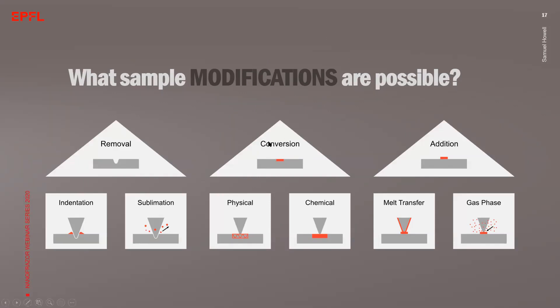With the materials that have been researched in the literature, we found there are three types of sample modifications: removal, conversion, and addition. Each modification includes different processes such as indentation, sublimation for removal, physical and chemical conversion of the material, or addition by melt transfer or from the gas phase. We separated the modifications in these three different categories because there are different challenges in terms of the fabrication related to each of these groups. In the first group, removal, we want to bring something away from the substrate without redeposition. Whereas in conversion, we would like to convert a material without considerably changing the topography. And in addition, one has the challenge to bring something onto the substrate with the heated tip.